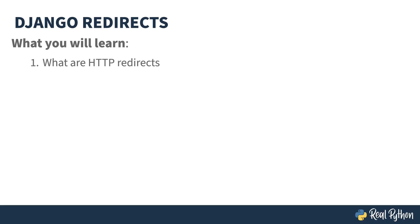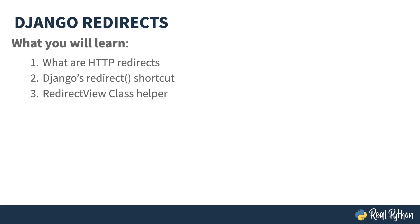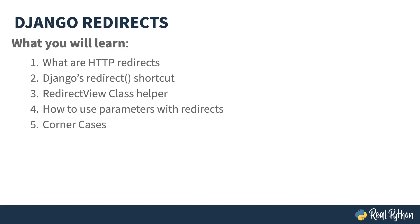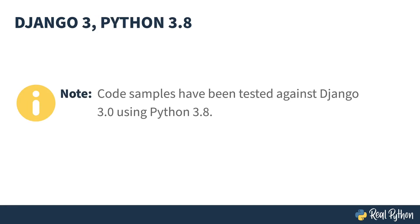First off, I'll cover just what an HTTP redirect is, how to use Django's redirect shortcut, how to use Django's redirect view class helper, what to do if your redirects require parameters, and finally those corner cases and caveats. The code in this course was created using Django 3 and Python 3.8. Most of the content should apply to earlier versions. Django 2 and Django 3 are fairly compatible, with one small exception which I'll mention in later lessons.